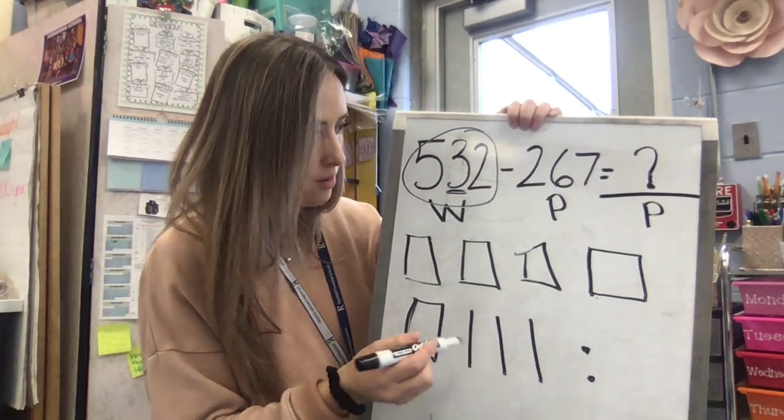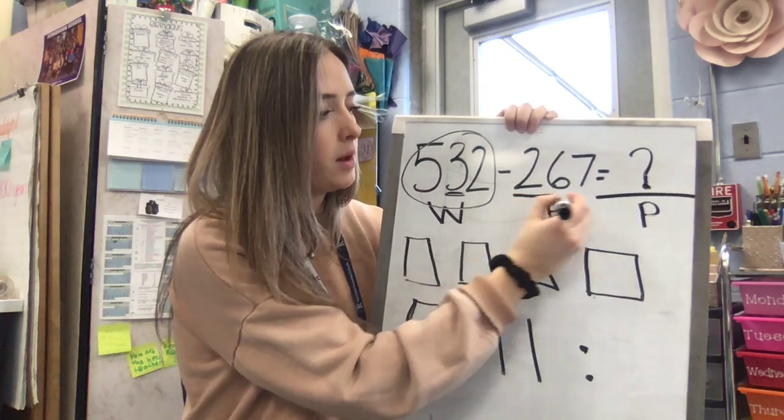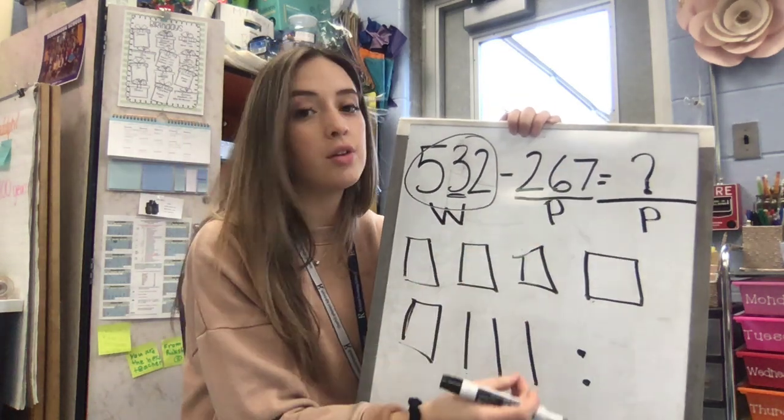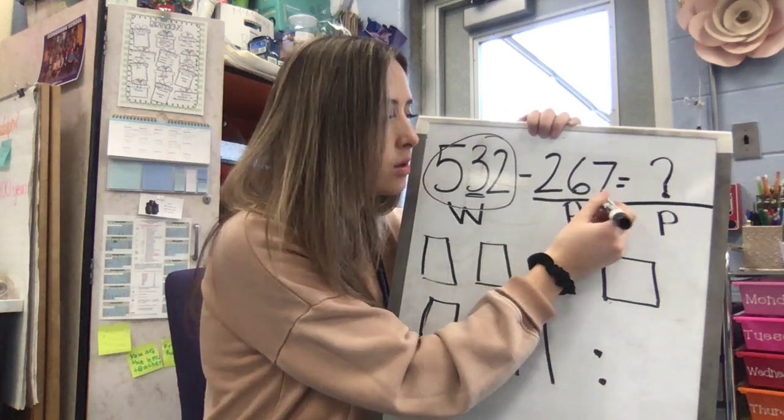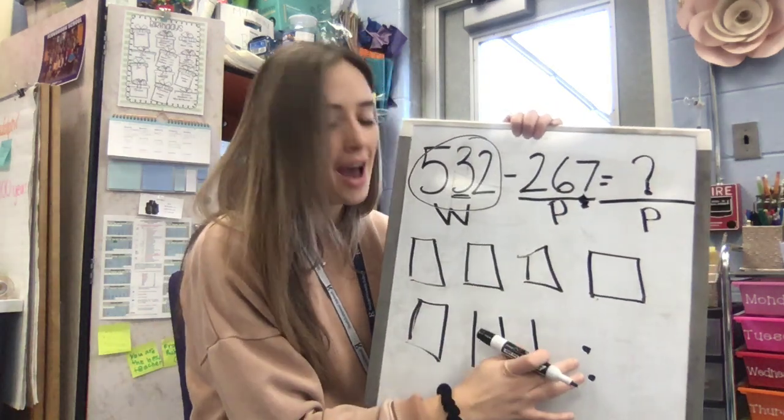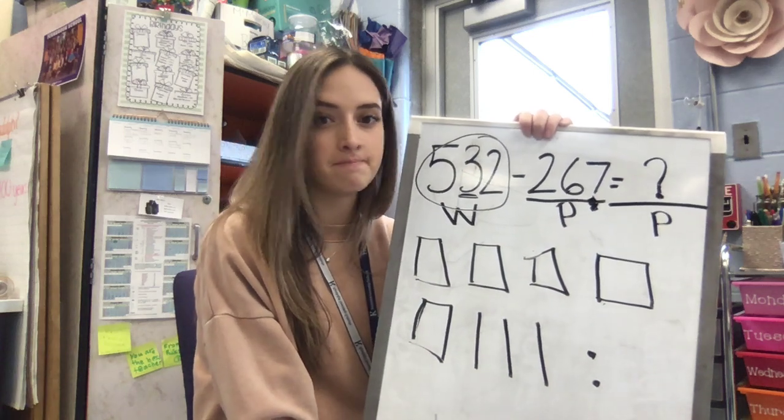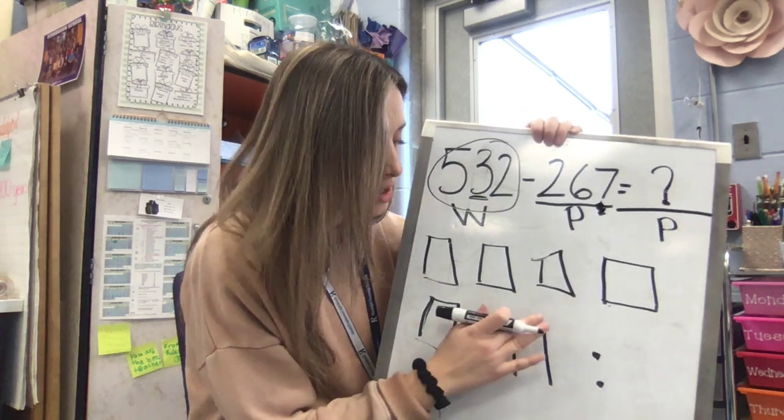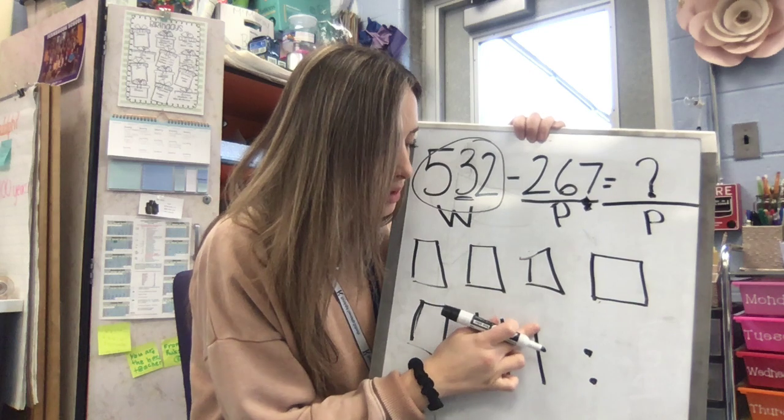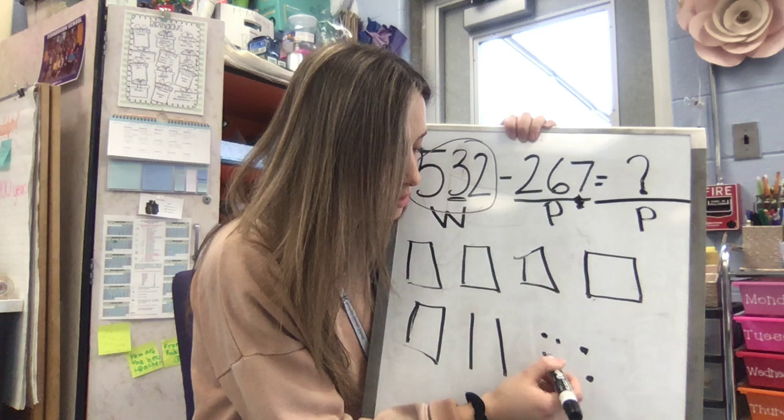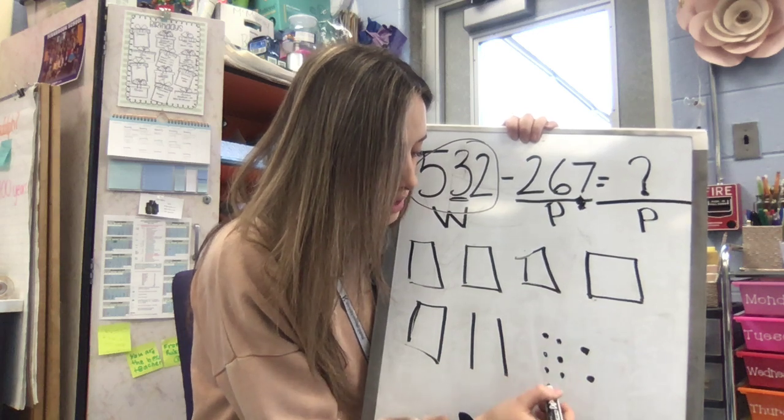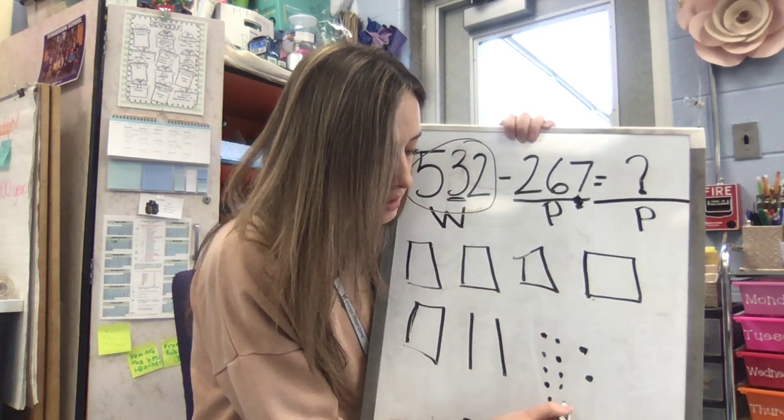So now I want to look at my part, right? What am I taking away? I don't have to draw this part. I need to take it away from this number. So we always start with our ones. Do I have 7 ones to take away? I do not. So I'm going to break this 10 into ones. So 1, 2, 3, 4, 5, 6, 7, 8, 9, 10.